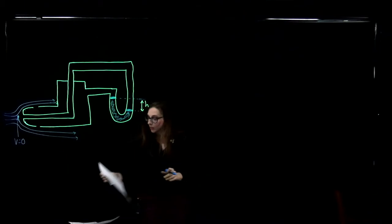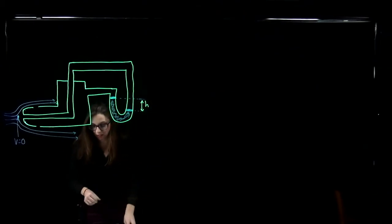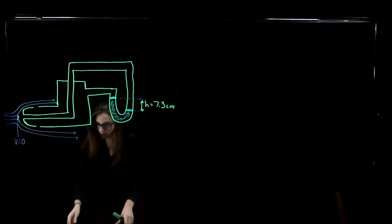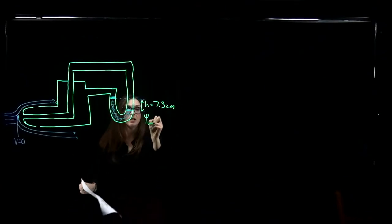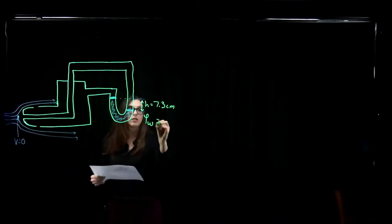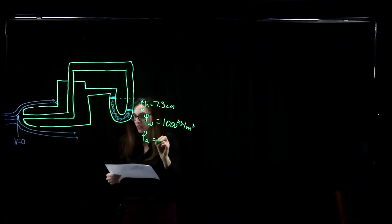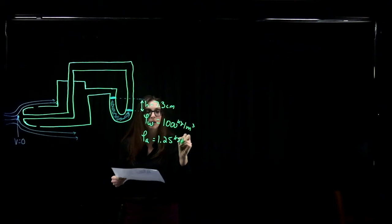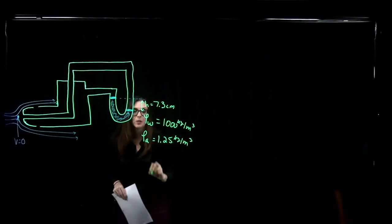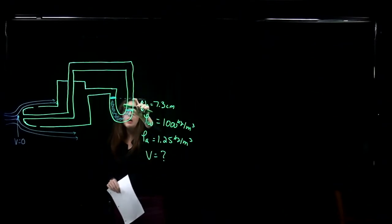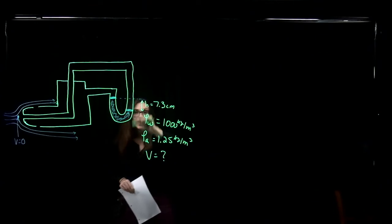Let's fill in some quantities. The difference in the liquid level in the U-tube — the difference between the two arms of the manometer — is equal to 7.3 centimeters. The U-tube is filled with water, so the density of water is 1,000 kilograms per meter cubed. The density of air is 1.25 kilograms per meter cubed. What is the airspeed of the plane — the speed of the plane relative to the wind — given only the difference in fluid height in the manometer?